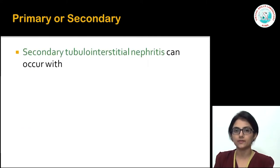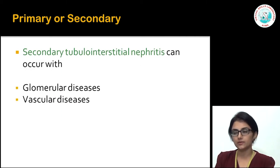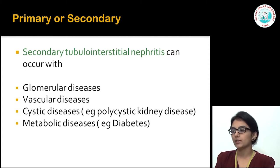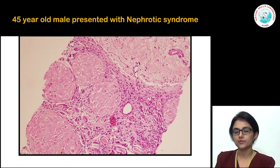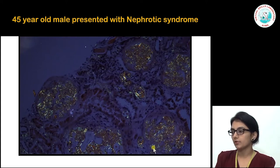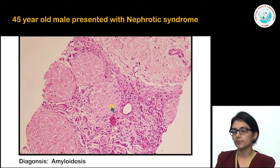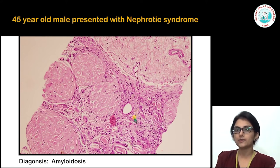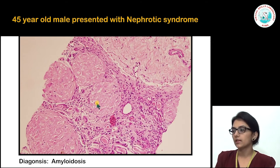Secondary TIN can occur secondary to diseases of other compartments of the kidney — glomerular disease, vascular disease, cystic disease, or metabolic diseases like diabetes. Here we have a renal biopsy from a 45-year-old male who presented with nephrotic syndrome. The predominant involvement is in the glomeruli, replaced by abundant eosinophilic material showing apple green birefringence on Congo red stain — glomerular renal amyloidosis. But the tubular interstitium is also abnormal, with atrophic thyroidized tubules and interstitium expanded by collagen with chronic inflammatory infiltrate — secondary tubular interstitial involvement.